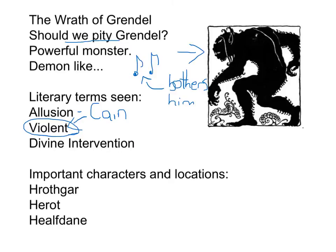As night comes, on page 42 line 30: 'Then, when darkness had dropped, Grendel went up to Herod, wondering what the warriors would do in that hall. When their drinking was done, he found them sprawled in sleep, suspecting nothing, their dreams undisturbed. The monster's thoughts were as quick as his greed or his claws. He slipped through the door and there in the silence snatched up 30 men, smashed them unknowing in their beds and ran out with their bodies, the blood dripping behind him, back to his lair, delighted with his night slaughter.'